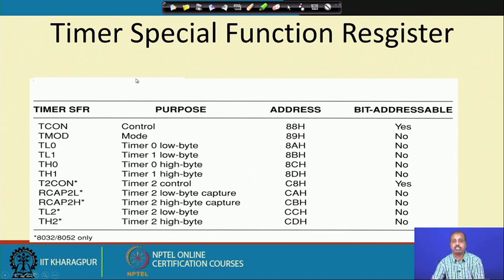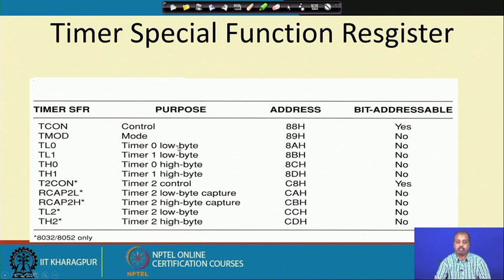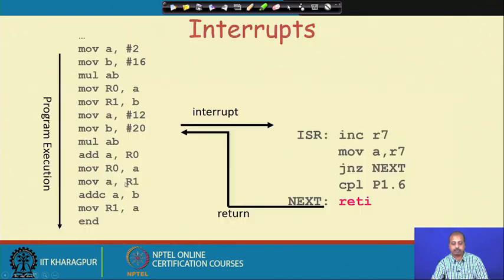There are many special function registers related to timers. The TCON register's address is 88H — it is bit addressable because the last digit is 8. Whenever the last digit is 8 or 0, the register is bit addressable in the 8051. The TMOD register is the mode control; its address is 89H and it is not bit addressable. Then TL0, TL1, TH0, TH1 are the timer low byte and high byte values — not bit addressable. T2CON is for the 8052, which has some special timer 2 modes.